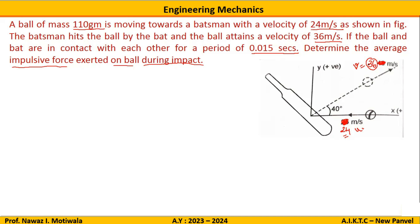Before applying the impulse-momentum equation, we need all forces and quantities like velocity and acceleration in either the X or Y direction. From the figure, the final velocity is inclined at some angle theta. So we resolve this velocity into components in the X and Y directions as 36 cos 40 and 36 sin 40 respectively. Now we can apply the impulse-momentum equation in both the X and Y directions.